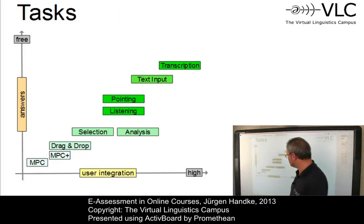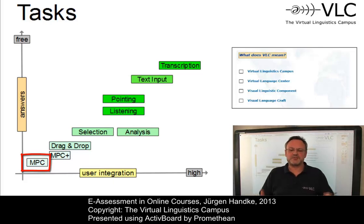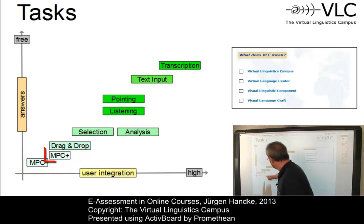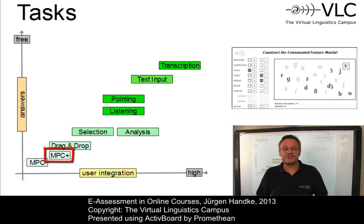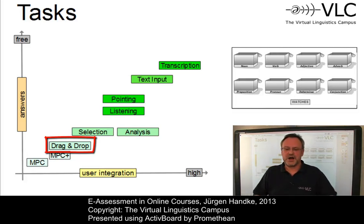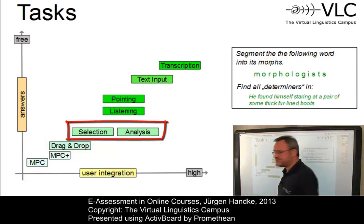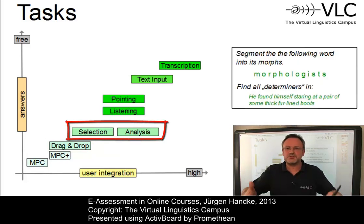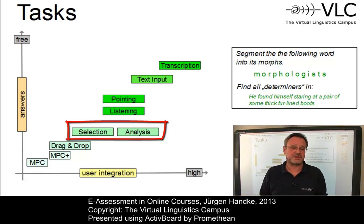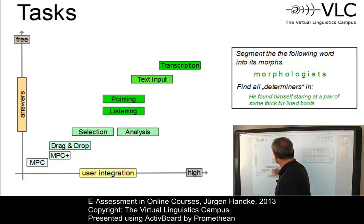The simplest type we use is the Multiple Choice task, where you have either one or several choices. Such tests can be extended to what we call Multiple Choice Plus, where the choice influences the set of alternatives. Drag-and-drop tasks are used to associate properties such as word classes or syntactic functions with linguistic elements. Selection and analysis tasks are used when something has to be analyzed into its component parts. Even though the possible answers are still restricted to some extent, the abstraction level on behalf of the user is much higher in such tasks.